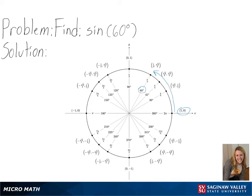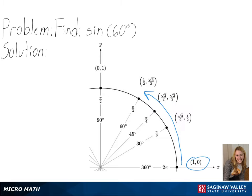Since we are finding the sine value, we will be taking the y-coordinate of our value, which in this case is the square root of 3 over 2. So for sine of 60 degrees, we get the square root of 3 over 2 as our final answer.